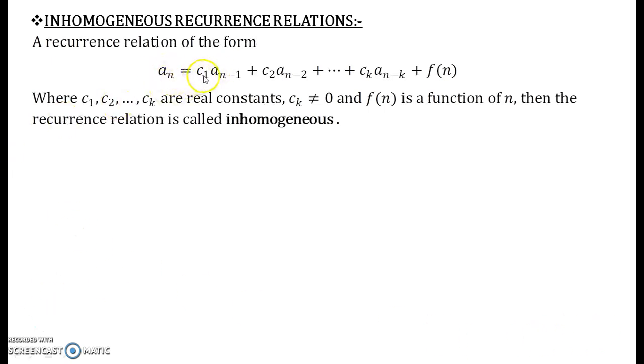The definition is: an equals c1 times an-1 plus c2 times an-2 plus so on ck times an-k plus f of n. And your c1, c2, ck are real constants where ck is non-zero, and you have the function f of n which is a function of n. Then it is an inhomogeneous recurrence relation, also known as non-homogeneous recurrence relation.